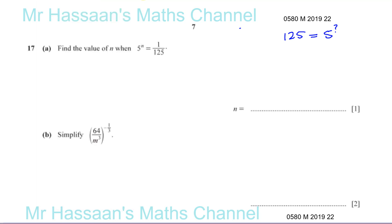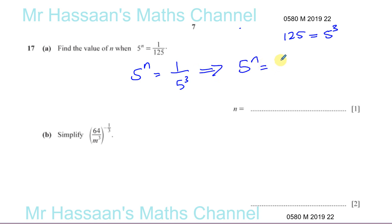So I can now express this as 5 to the power of n equals 1 over 5 cubed. Now 5 cubed can also be expressed with 5 on the numerator — we put 5 to the power of 3 as the numerator, but the power has to become a negative power. So 5 to the power of minus 3 is the same as 1 over 5 to the power of 3. That's from the law of indices: a to the power of negative n equals 1 over a to the power of positive n.